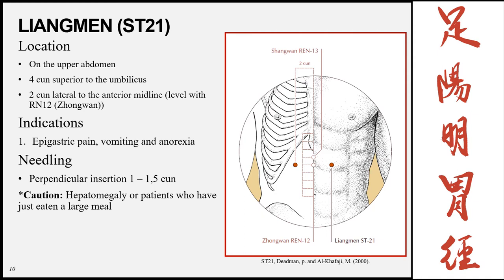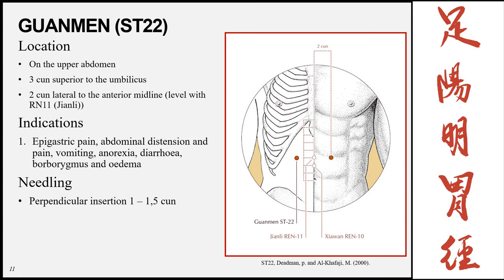Liangmen, Stomach 21, is on the upper abdomen, 4 cun superior to the umbilicus and 2 cun lateral to the midline. Find the umbilicus and suprasternal angle, go to their midpoint for 4 cun, then go 2 cun lateral using the clavicle method. This point can be used for epigastric pain, vomiting, and anorexia. Insertion is perpendicular, 1 to 1.5 cun — slightly deeper as we move further from the lungs — with the same caution in patients with hepatomegaly or who have eaten a large meal.